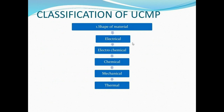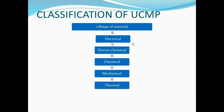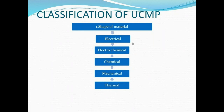For the classification of unconventional machining, we divide it based on four criteria: energy type, mechanism, source of energy, and medium of transfer. Based on the shape of material, we choose from electrical, electrochemical, chemical, mechanical, and thermal methods. These are the unconventional machining methods — based on different types of materials, we choose different types of methods.